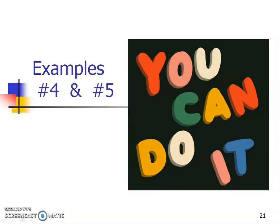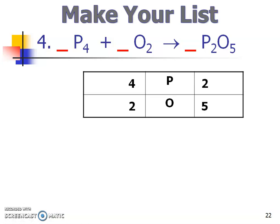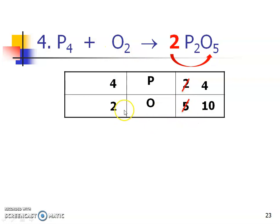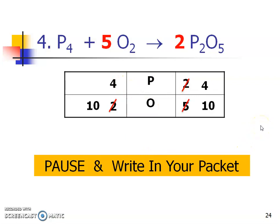Examples four and five — I'll go a little quicker. Example four: make your list and count how many of each element are on each side. Hopefully you paused and put P and O with your starting values. Phosphorus: four on one side, two on the other. I'll put a two in front of P₂O₅ — diphosphorus pentoxide. Remember that two affects both phosphorus and oxygen, so I change both amounts. Phosphorus is balanced. Now for oxygen: I have ten, and two times five gives me the ten I need. Balanced!